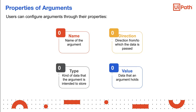Name specifies the name of the argument. It represents the title of the information that is being stored by the argument. If the user does not add a name to an argument, it is automatically generated.